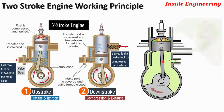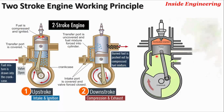In a four-stroke engine, the crankshaft completes two full revolutions for four piston strokes, or one engine cycle. So we get one power stroke from every two revolutions of the crankshaft.